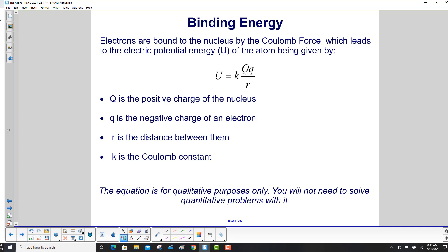Electrons are bound to the nucleus by the Coulomb force, which leads to the electric potential energy of the atom being given by KQq over r. Where Q is the positive charge on the nucleus, q is the negative charge of an electron, r is the distance between them, and K is the Coulomb constant.